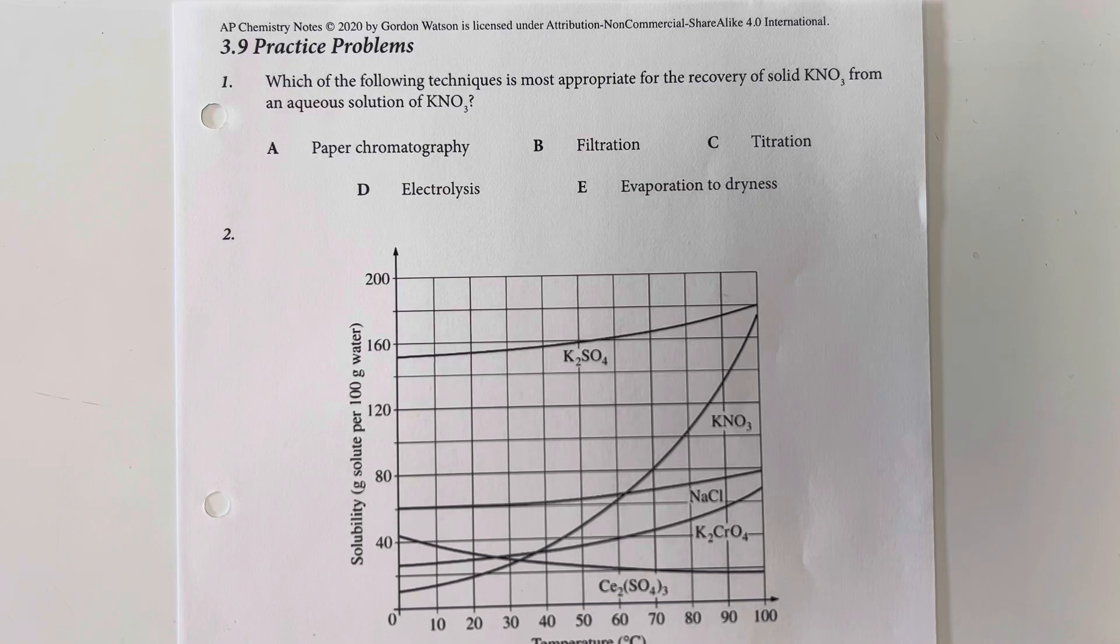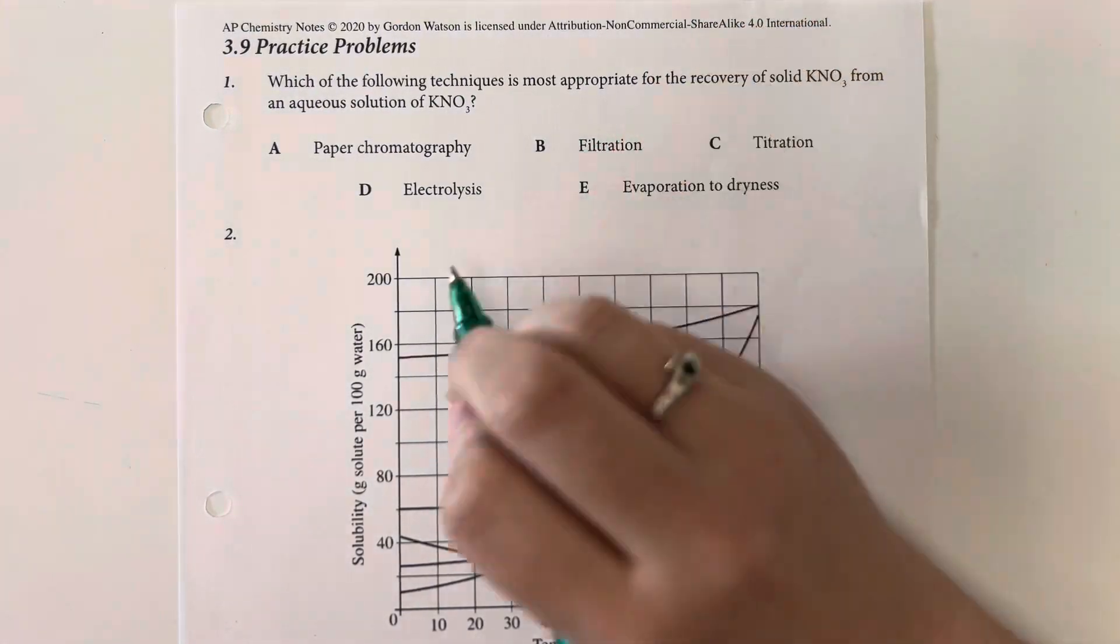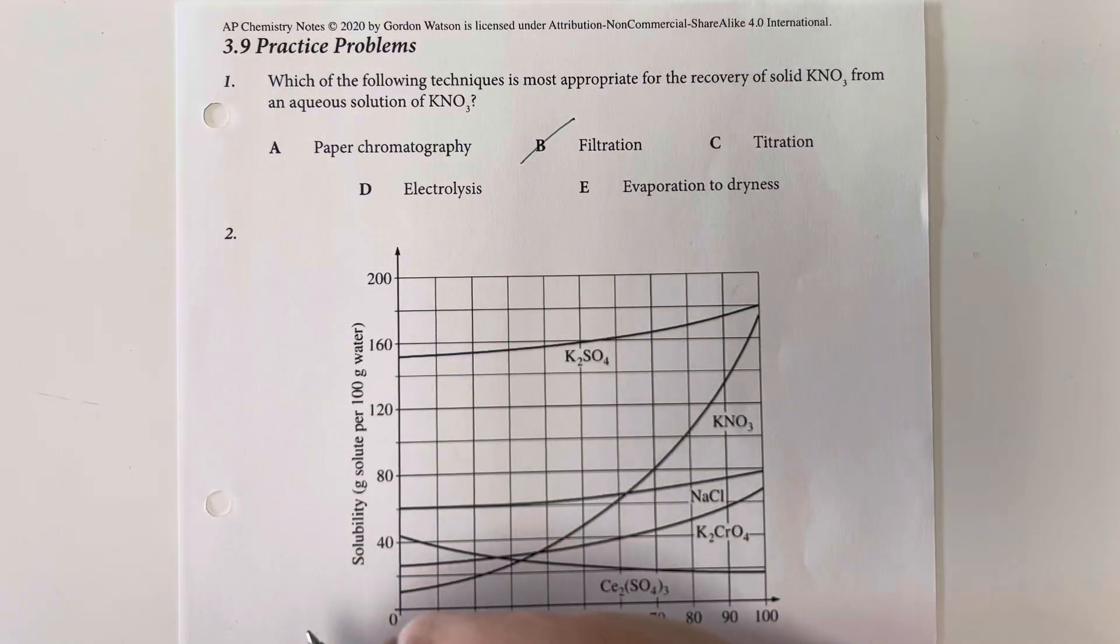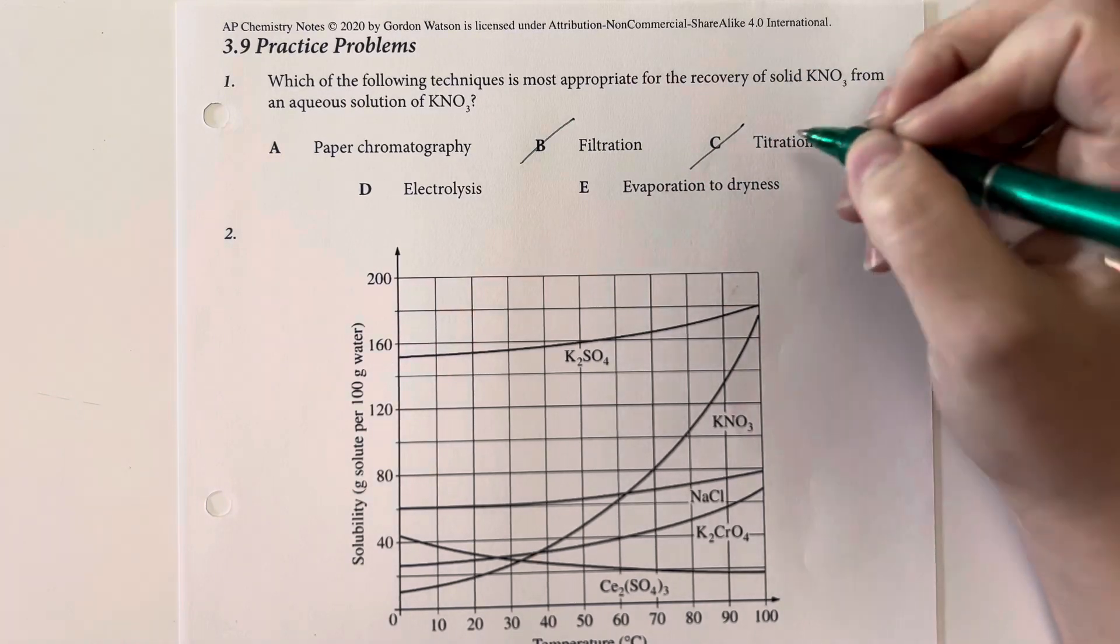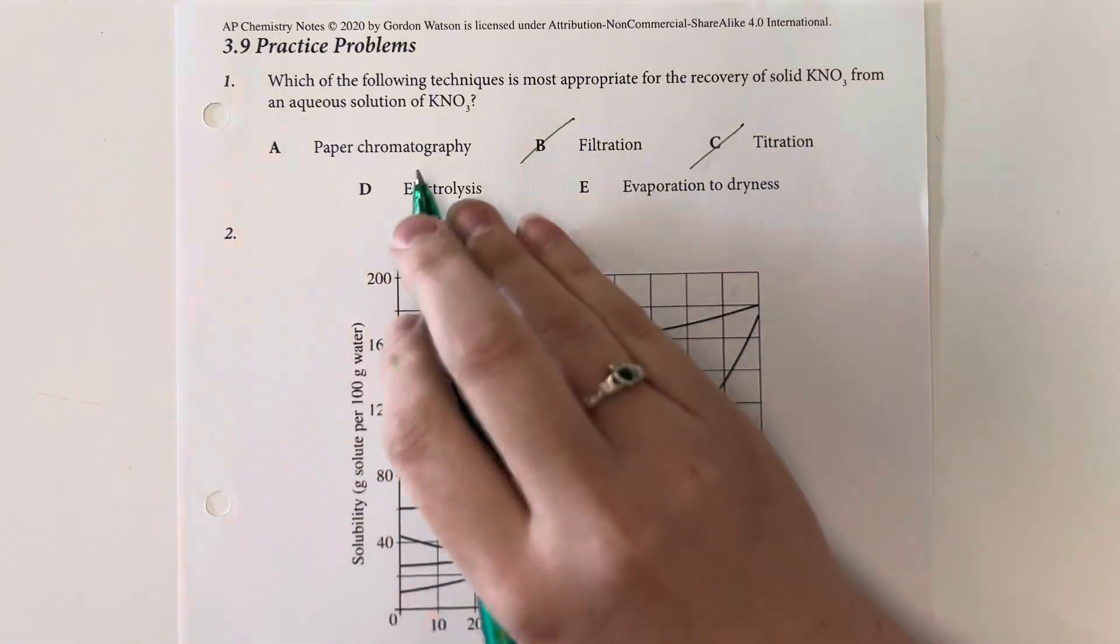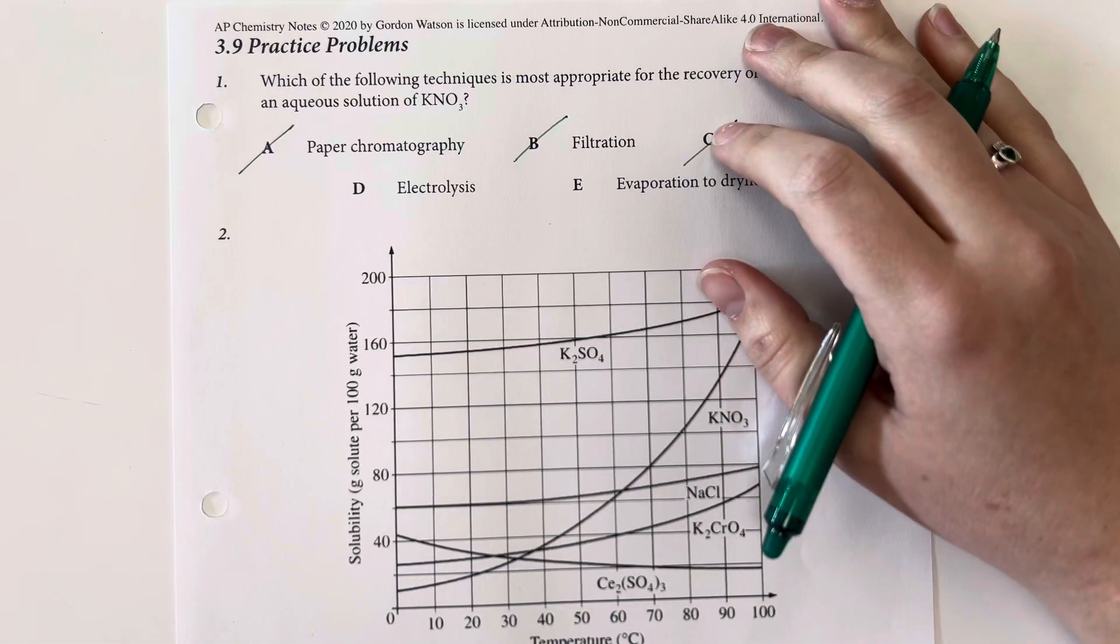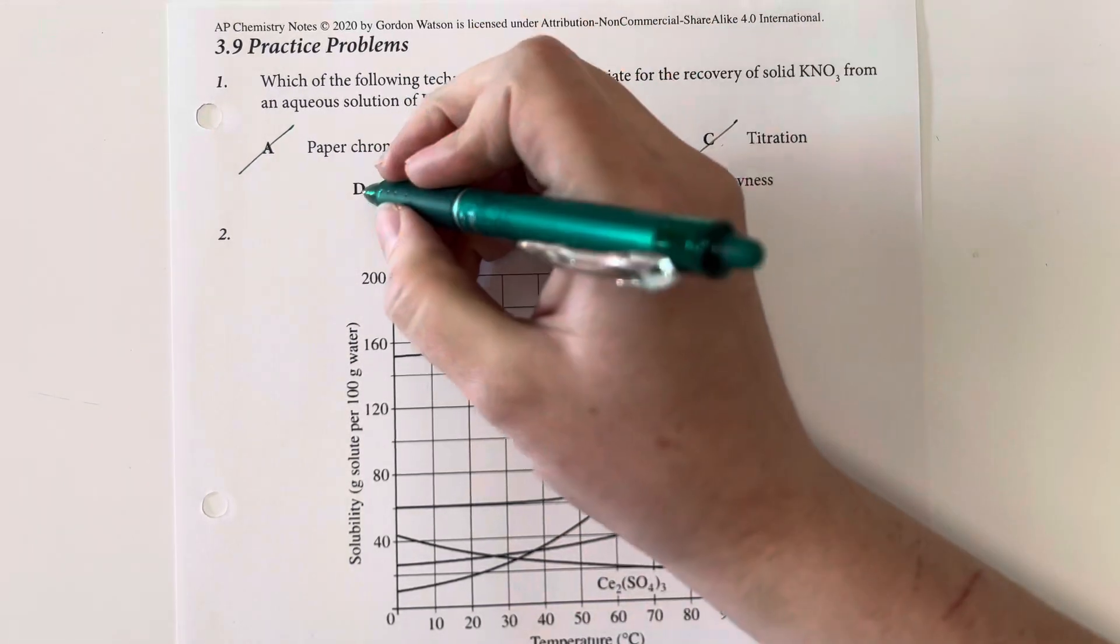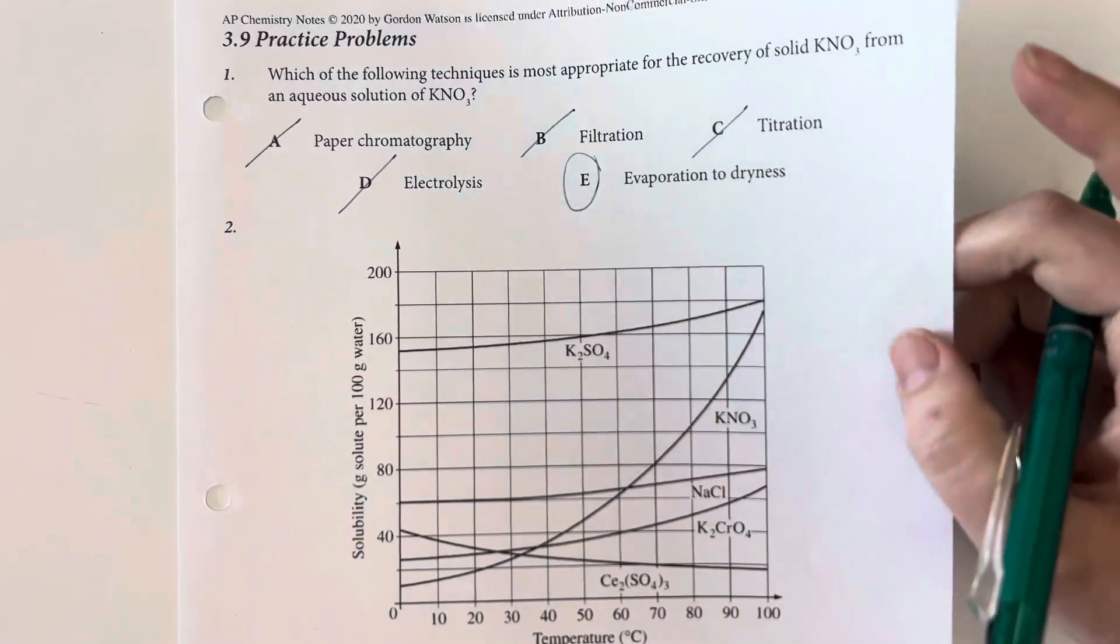So if I want a solid, I'm going to need something that is going to separate this out. Filtration is not going to work since it's aqueous, it's going to just go straight through the filtration. Titration is a means to identify the concentration of something. Paper chromatography is going to tell the relative polarity of the solution, not going to separate anything out. Electrolysis also not going to help. So my only option is going to be to evaporate it to dryness.